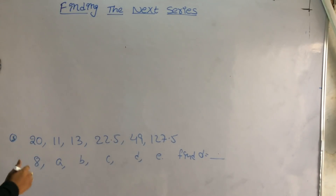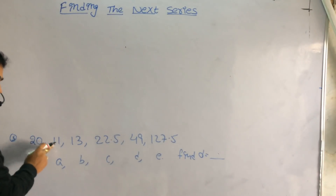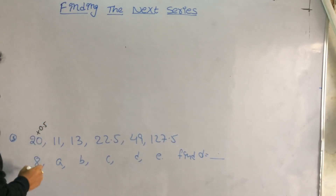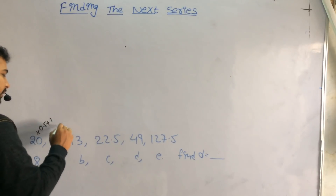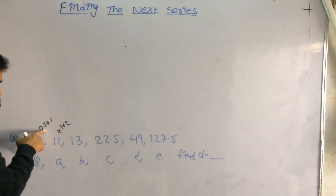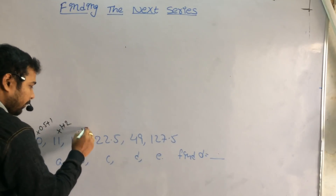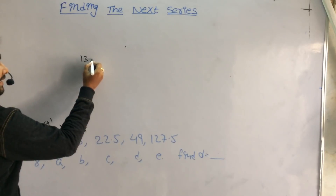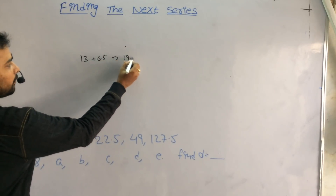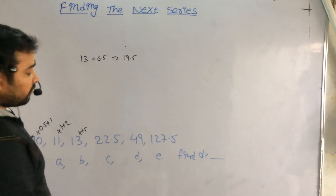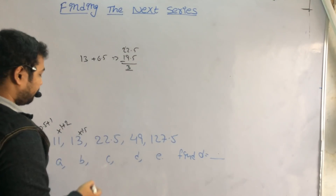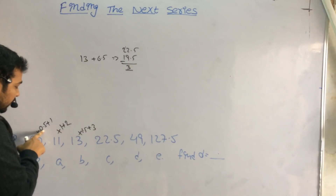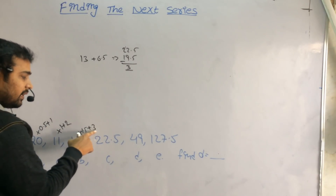In the third question, 20 becomes 11 — how? It is approximately half the number: 20 multiplied by 0.5 is 10, plus 1 is 11. Then 11 becomes 13: 11 into 1 is 11, plus 2 is 13. Then 13 into 1.5: 13 by 2 is 6.5, so it would be 19.5, but here it is 22.5 — the difference is 3, meaning plus 3. So the pattern is: ×0.5 +1, ×1 +2, ×1.5 +3.